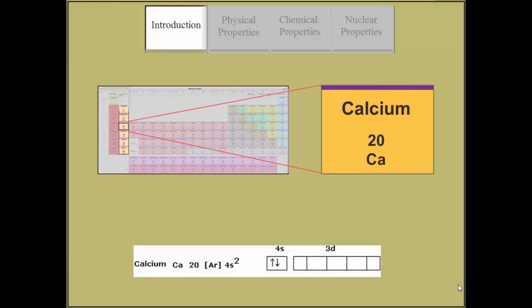Calcium's electronic configuration displays that it contains two valence electrons, giving it the ability to form two covalent bonds and create compounds. This explains why in nature, calcium is only found in unification with other elements.